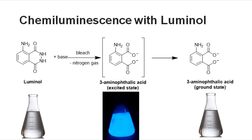The luminol in this reaction is getting oxidized by bleach to form a new compound called 3-aminophthalic acid. This is actually a pretty complicated reaction. The light we see is caused by electrons releasing energy. Electrons like to be at what is called their ground state, and if they have gone into what is called their excited state, they will want to relax by giving off energy, which we see as light.